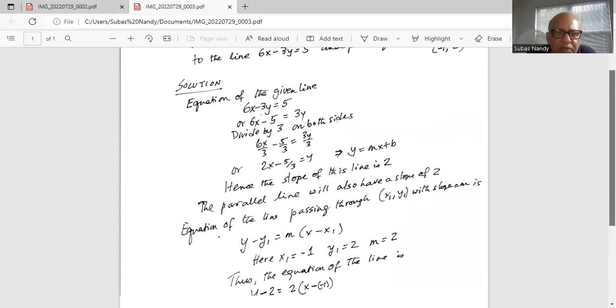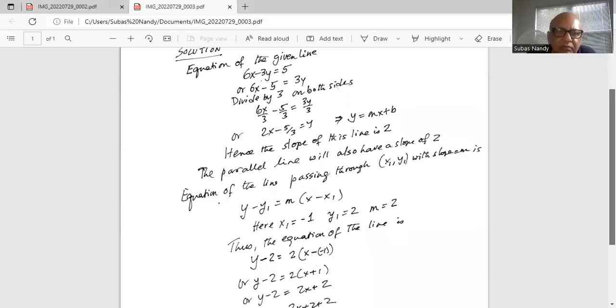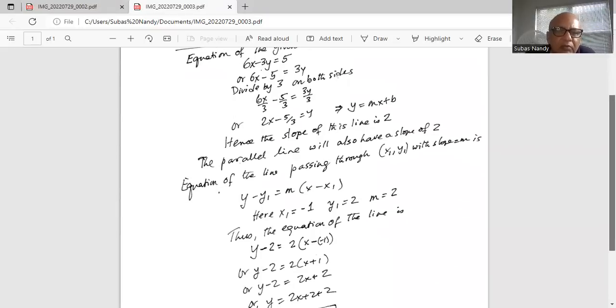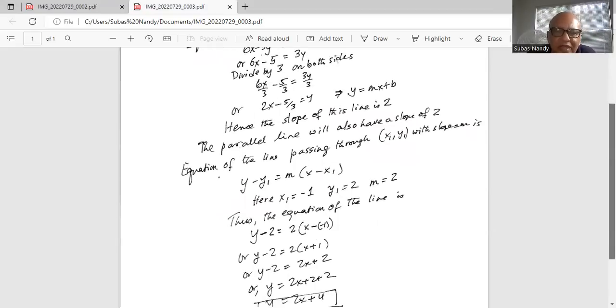So y equal to 2x plus 4. Remember the original line is y is equal to 2x minus 5/3. So in both cases, the coefficient of x is 2, which is the slope, because parallel lines have the same slope.